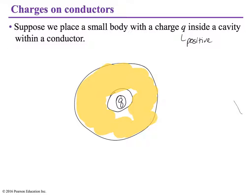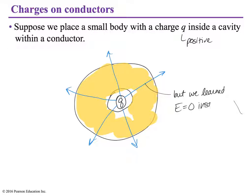Now, according to what we learned, this charge would create an electric field that should radiate out away from it. The problem is that we learned the electric field is zero inside the conductor. So, how are we going to fix this?